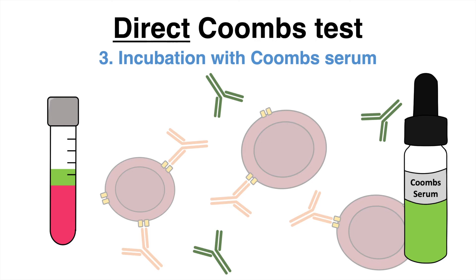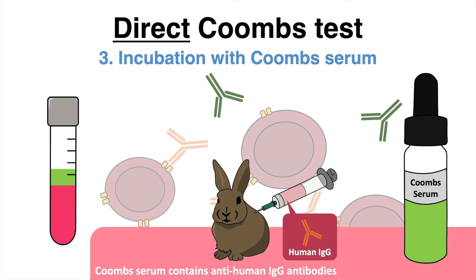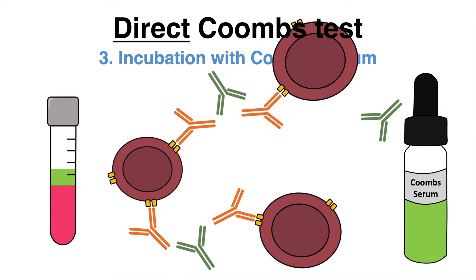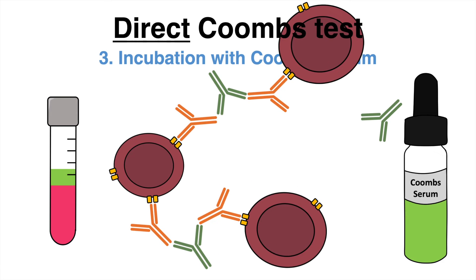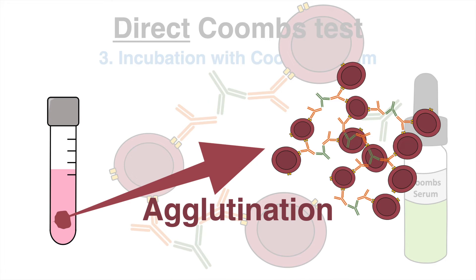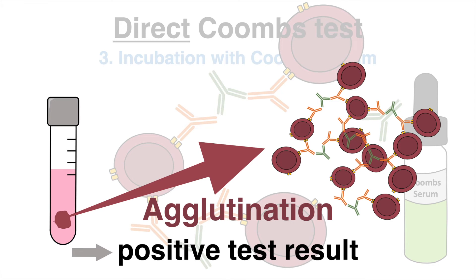In the next step, the patient's erythrocytes are incubated together with the so-called Coombs serum. The Coombs reagent is obtained by immunization of rabbits with human serum. Therefore, the Coombs serum contains anti-human globulin antibodies. After mixing the Coombs reagent with the red blood cells, the anti-human globulin will bind to the Fc part of the human IgG antibodies on the surface of red blood cells, if present. That causes agglutination and a positive test result.